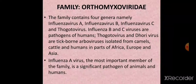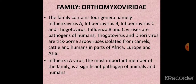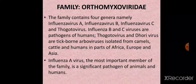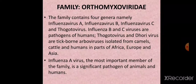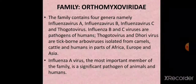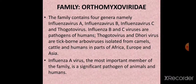The family orthomyxoviridae contains four genera: influenza virus A, influenza virus B, influenza virus C, and thogoto viruses. Influenza A, B, and C are human pathogens. Thogoto and Dhori viruses are tick-borne arboviruses, isolated from camels, cattle, and humans in parts of Africa, Europe, and Asia. Out of all these, influenza A virus is the most important member, being a significant pathogen of both humans and animals.